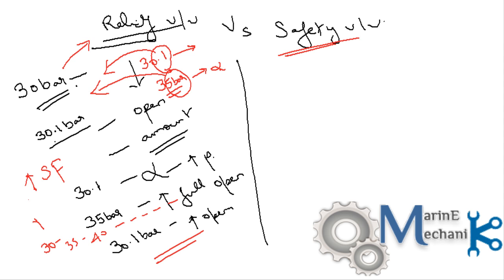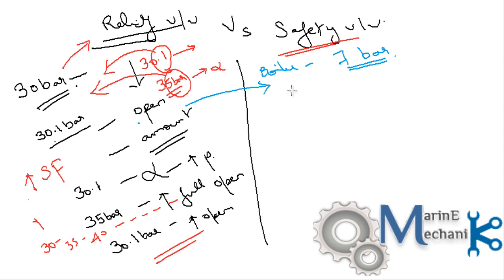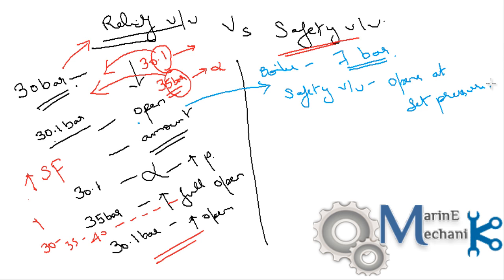Now let's look at the safety valve. Assume a boiler operating at 7 bar. Unlike the relief valve which opens slightly above the set pressure, the safety valve set at 7 bar opens at exactly 7 bar — it lifts at the set pressure.